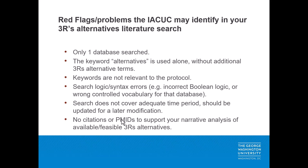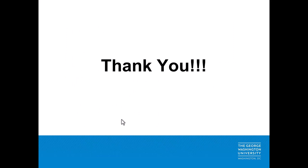Some red flags that the IACUC looks for in your 3Rs alternatives literature search are: if you've only searched one database; if you've only used the keyword 'alternatives'; if the keywords are not relevant to the protocol; if the search syntax is incorrect — for example, using the wrong Boolean operators or the wrong search tags for that database; if the search does not cover an adequate time period; and, as already mentioned, your search should be updated for any later modifications you make to the protocol. Also a red flag: if there are no citations or PMID numbers to identify the articles that support your analysis.